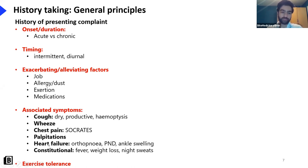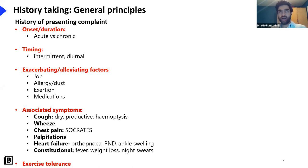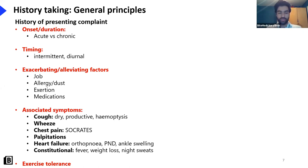You must ask specifically about orthopnea, paroxysmal nocturnal dyspnea, and ankle swelling. Orthopnea is breathlessness on lying flat; paroxysmal nocturnal dyspnea is when patients wake up breathless; ankle swelling is peripheral edema — all symptoms related to heart failure. Is there any fever, weight loss, or night sweats? If a patient has shortness of breath with fever, weight loss and night sweats, the two differentials are TB and cancer. Ask about exercise tolerance — how far can they walk? Can they walk 50 meters, down a corridor, or to the toilet?